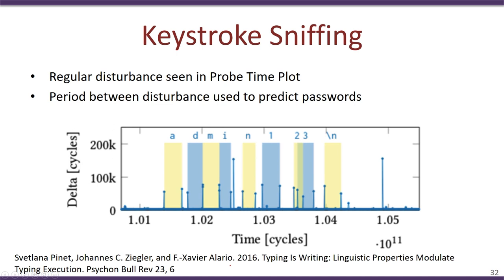A plot from a recent paper shows delay in clock cycles over time. When no keys are pressed, the execution time measured by the spy is low. When a key is pressed, there is a clear spike in execution time. After the keystroke, execution time returns to baseline. There are also false positives — spikes occurring even when no key is pressed — indicating noise in the measurement.